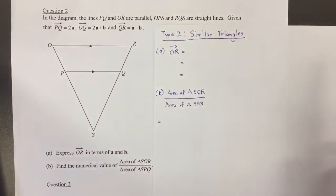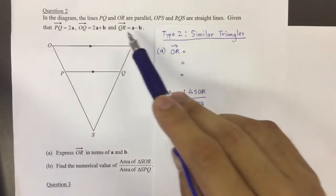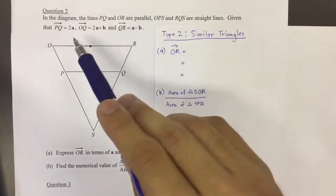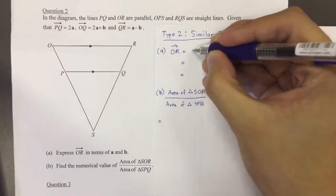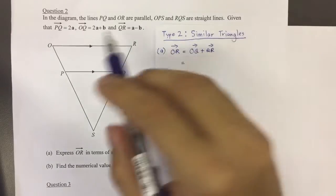So clearly there's no direct route first and foremost, so we're going to take an indirect route. We take a look at the vectors that are given to us, and we realize that OR could be expressed as O to Q, and then you continue from Q to R.